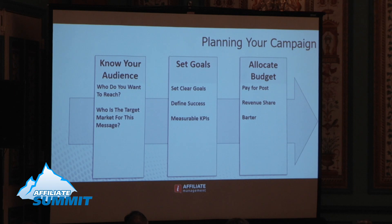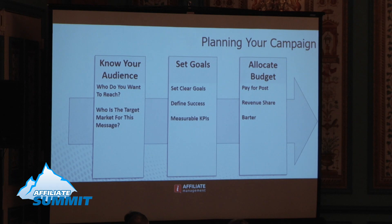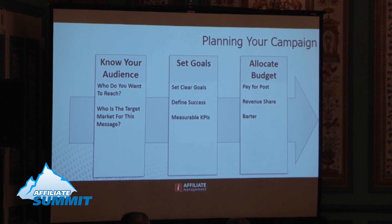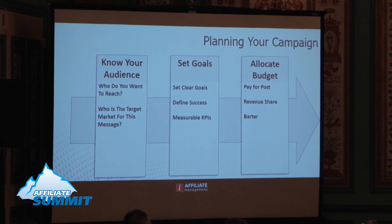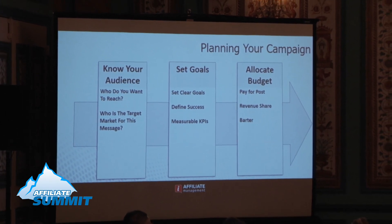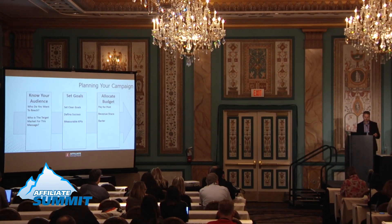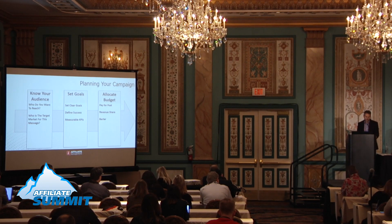The next step is to set clear goals for your influencer marketing campaign. It's important to define what success looks like and back that up with measurable KPIs. Since we're at Affiliate Summit, a lot of us will approach influencer marketing wanting to drive conversions, revenue, and leads. But there are other goals — for example, you might want to drive brand awareness, in which case you'd define success in terms of brand mentions on social media or engagement with a particular piece of content.